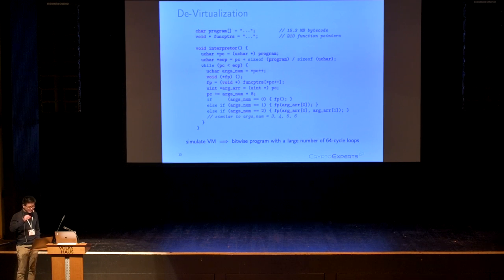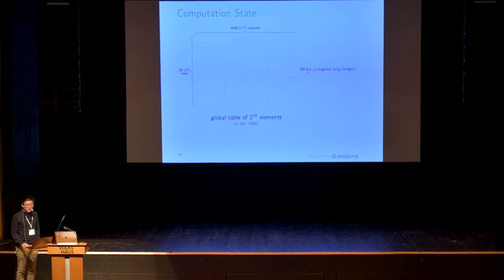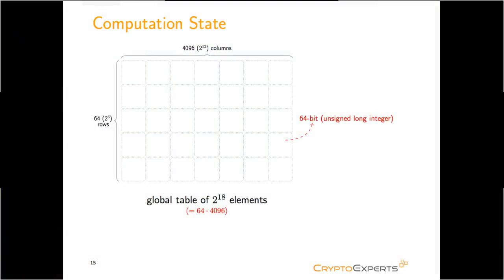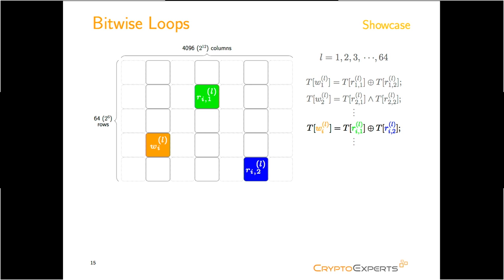In order to understand how this bitwise program works, we need to know how the global table is used. Basically, we have a global table of 2^18 elements, each element is 64-bit length. It can also be viewed as a two-dimensional array of 64 rows and 4,096 columns. There is an iteration of loops that cycles 64 times and has a sequence of bitwise operations. The operands and results are taken from and put back to the table. For example, in the highlighted instruction, two wire values from the blue and green cells are taken, XORed, and put back to the orange cell.